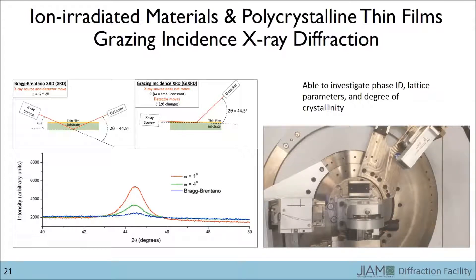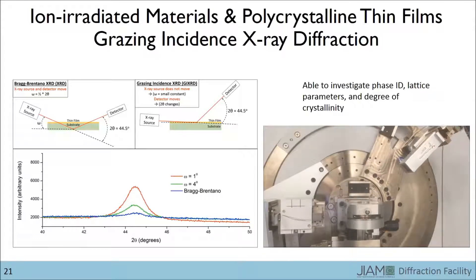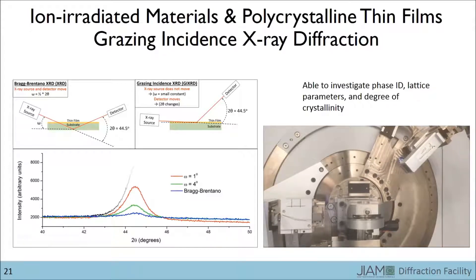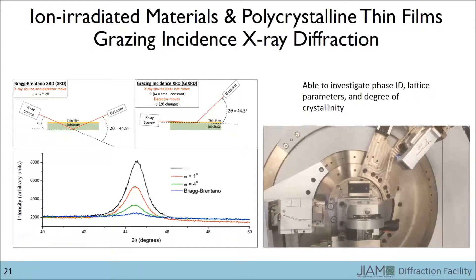Finally, the grazing angle is reduced to half a degree, and as you'll see in a moment, the peak intensity increases further. Now, in case I'm leading you to believe that the peak will continue to get larger as you decrease the angle, there is some angle at which the X-rays no longer penetrate into the material and you stop seeing peaks altogether.